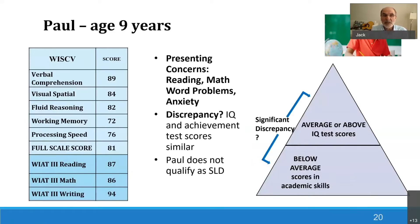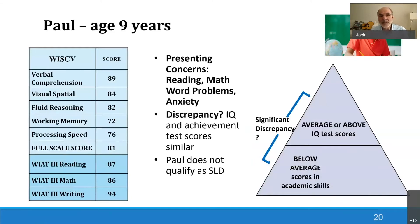Some would call him a slow learner — I actually don't like that term. He's not really very, very low; he's low average. But all of his achievement is basically the same except writing, which is curious.